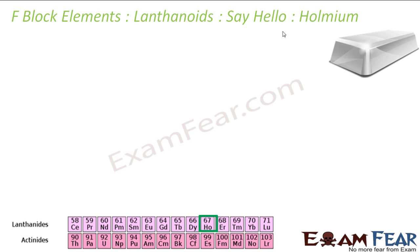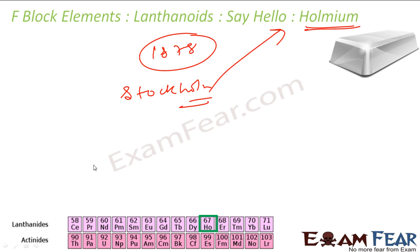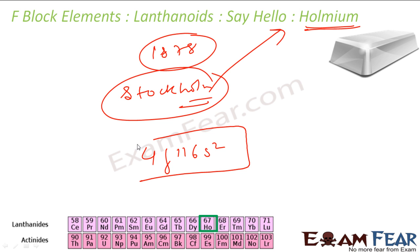Holmium is a soft, malleable, silvery-white metal discovered in 1878. It is named after the city of Stockholm. It has the highest magnetic strength of any element and is used in nuclear reactors. A good way to remember: Stockholm attracts a lot of people — similarly, holmium is very attractive magnetically. Its electronic configuration is 4f¹¹ 6s².